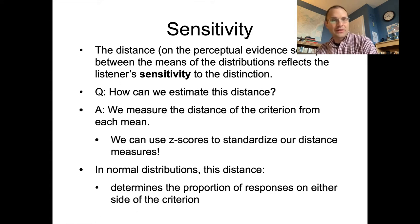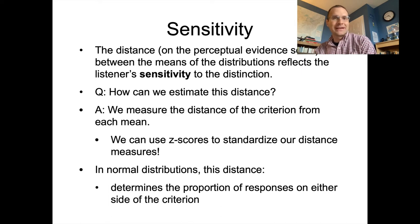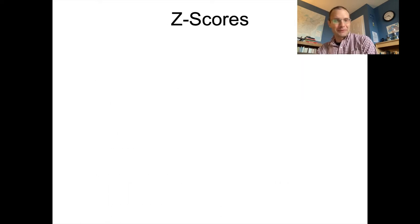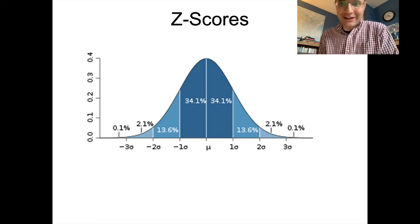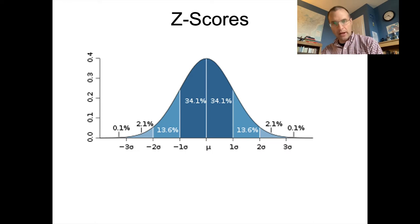We've done this before — there's nothing really new here. We're just applying it in a new way to a new kind of data, which you might get in perception experiments that you run yourself. For now, we're going to play around with fake data and walk through an example of how this works. We've seen this before for our normal distribution.